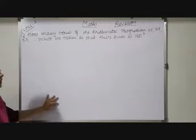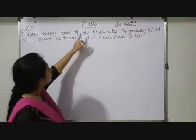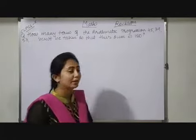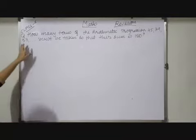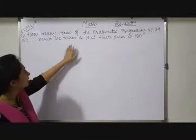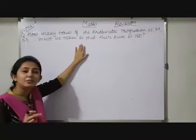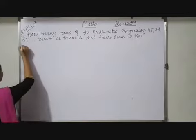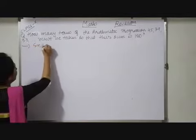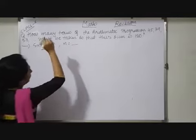Now students, here your question is how many terms of the AP - AP is given here 45, 39, 33 - must be taken so that their sum is 180. Here children, they have given SN equals to 180 and we have to find out N.